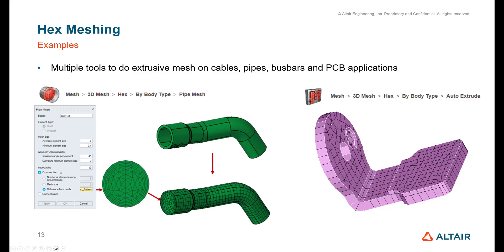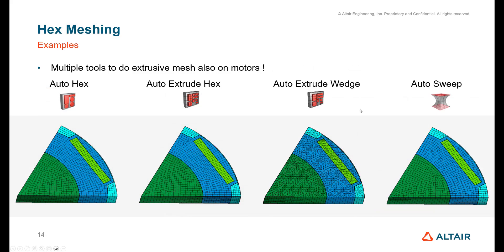I made a little case where I tried to mesh the motor rotor with these different tools. You can see depending which option you take between auto hex or extrude hex or extrude wedge auto sweep, there are many tools within SimLab to help you take some mesh, extrude it in different types of elements following different rules, and you can see the different type of results in this case.